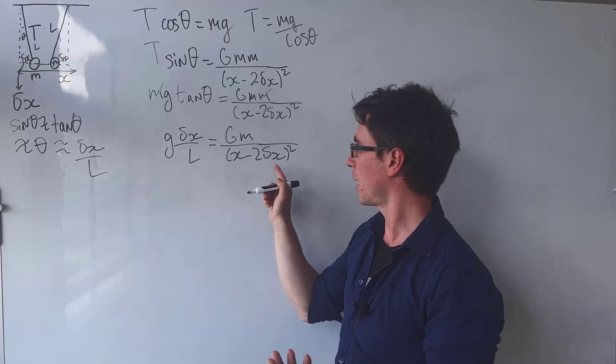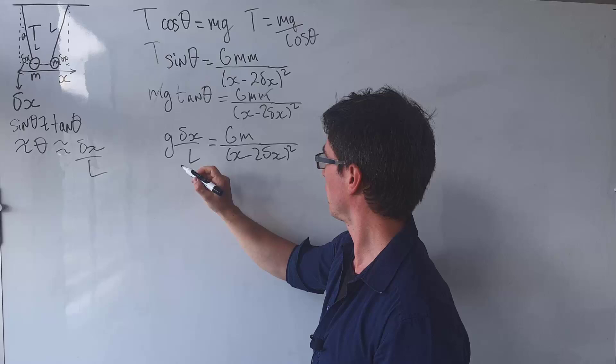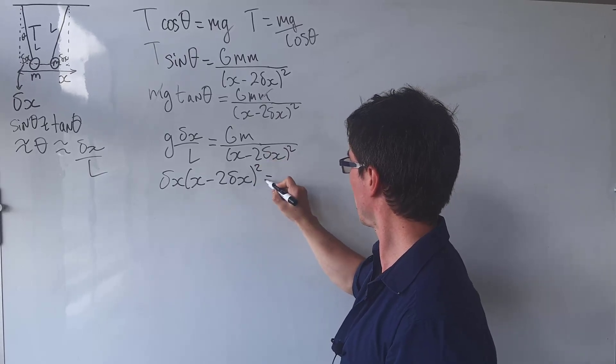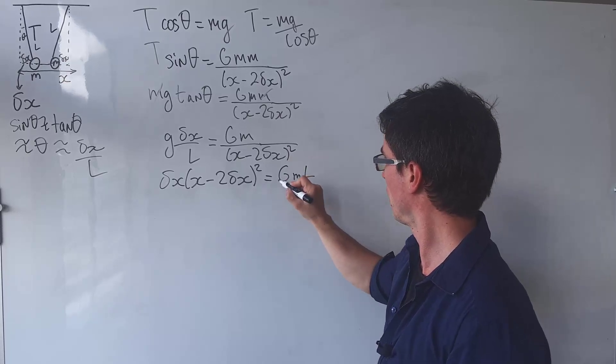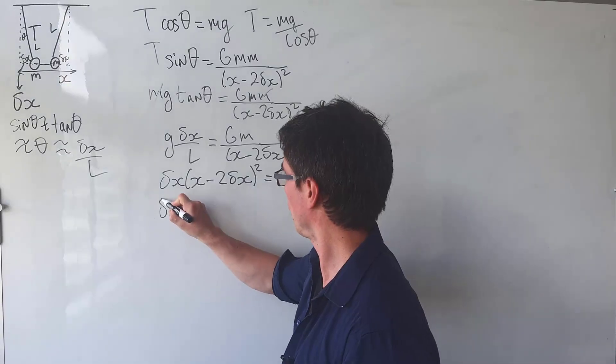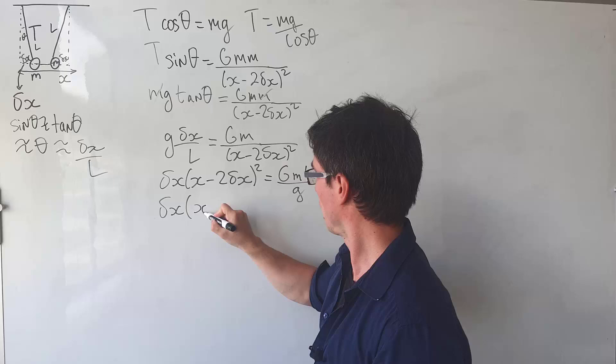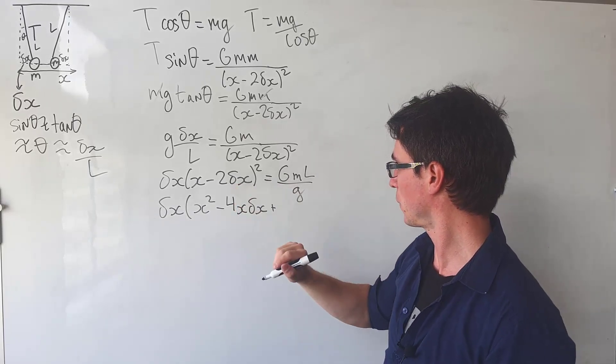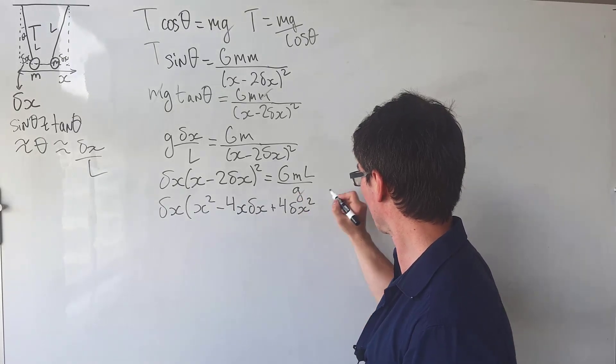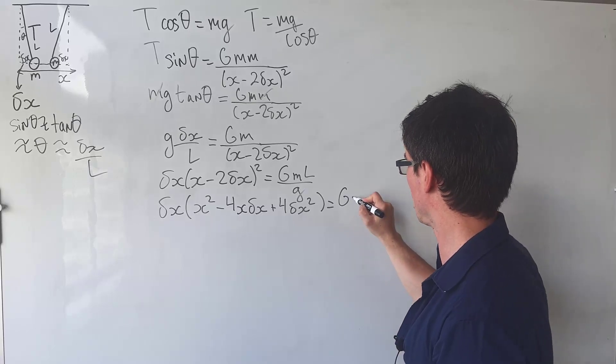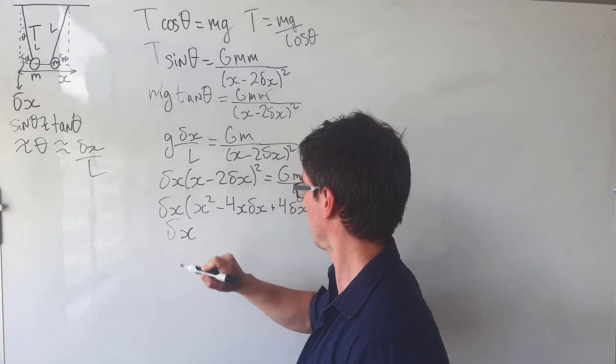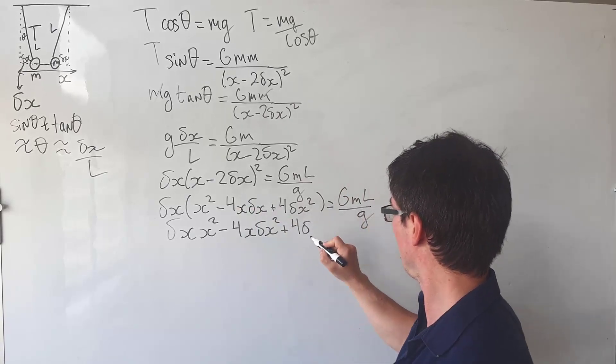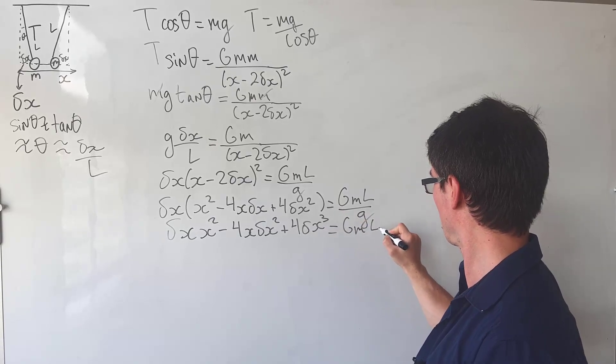Let's take everything that has a delta x and let's bring it on to this side. So what we get is that delta x times x minus 2 delta x squared will be equal to gml divided by the gravitational acceleration. So delta x will be equal to x squared take away 4x delta x and then plus this term squared, which is going to be 4 delta x squared. And this will be equal to gml over g.